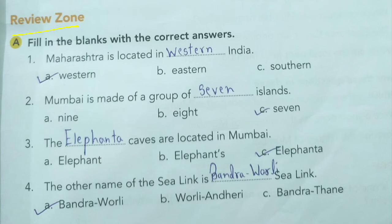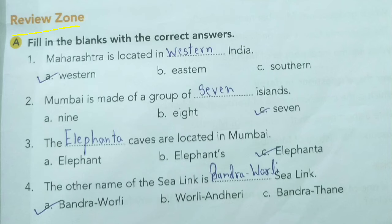Second, Review Zone. Fill in the blanks with the correct answer from the given options. First: Maharashtra is located in blank India. Options: A. Western India, B. Eastern India, C. Southern India. The answer is Western India.